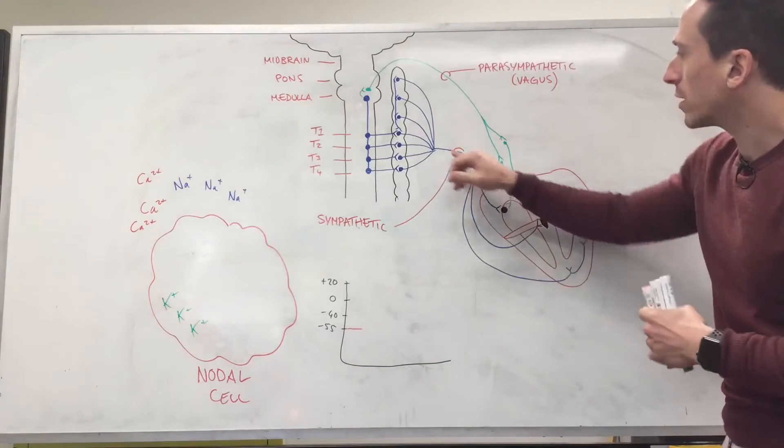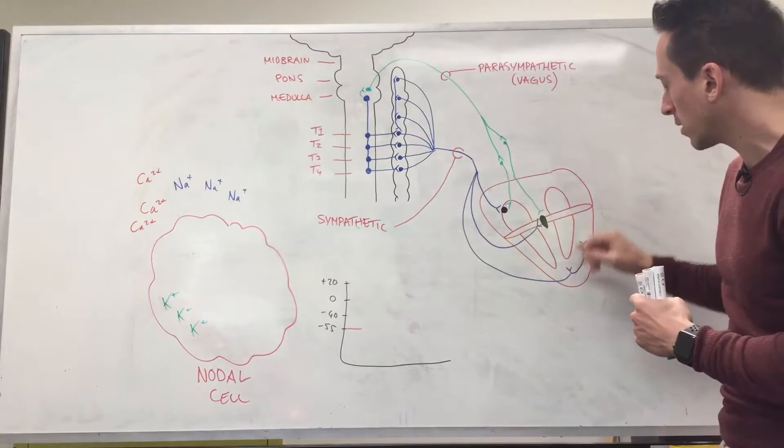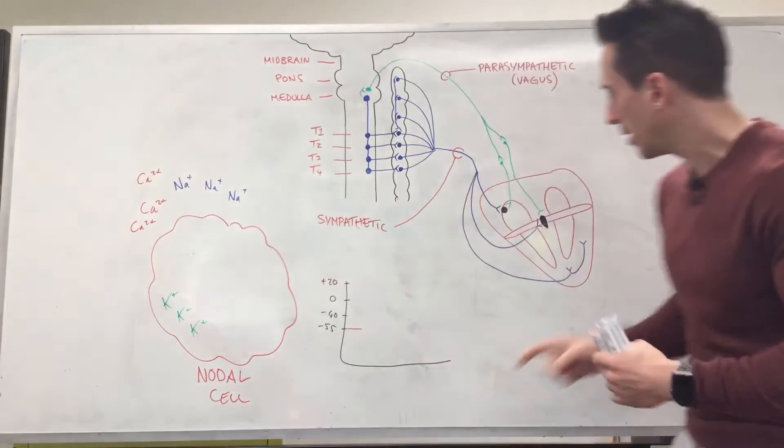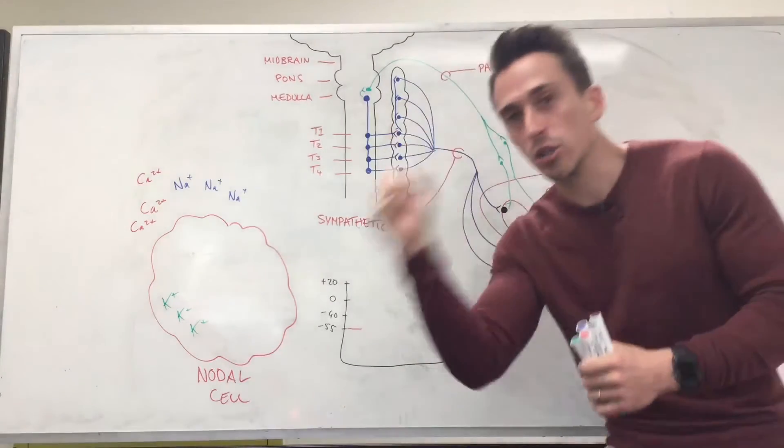Now the muscle—if you've got sympathetic nerves innervating the muscle, it's going to tell them to contract harder. So SA node and AV node: speed. Musculature: contractile force.